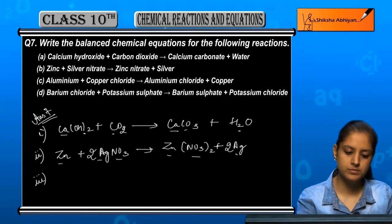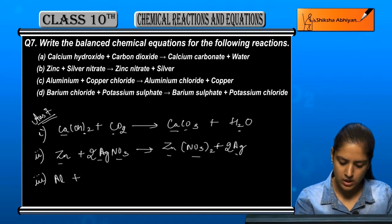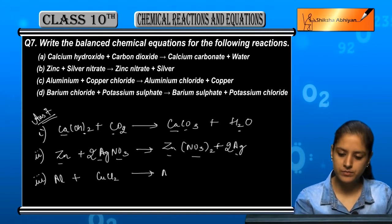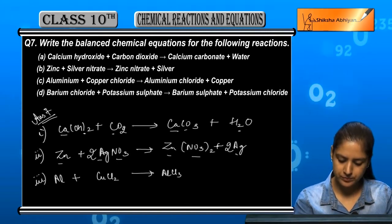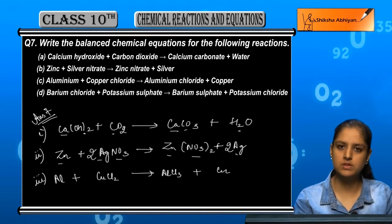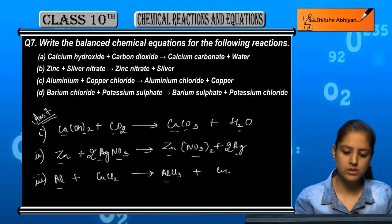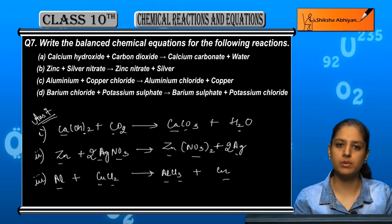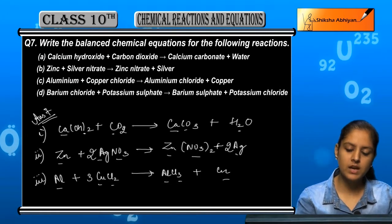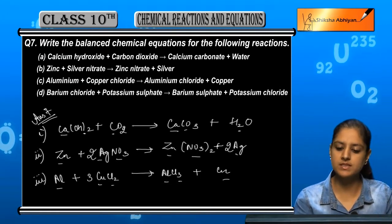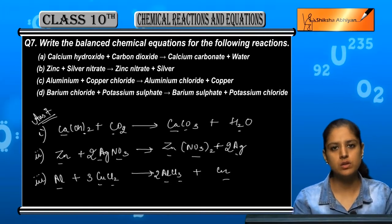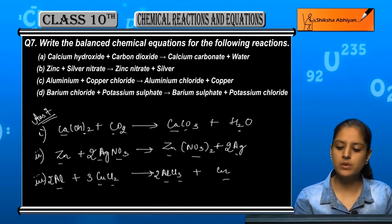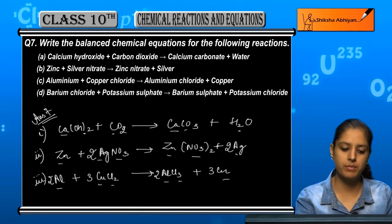Third reaction: Al plus copper chloride CuCl₂ gives AlCl₃ plus copper Cu. Al is 1, Cu is 1, but Cl is 2 on the left and 3 on the right. To balance Cl, multiply CuCl₂ by 3 to get 6, and AlCl₃ by 2 to get 6. Al becomes 2 on the left, so multiply Al by 2. The balanced form is: 2Al + 3CuCl₂ → 2AlCl₃ + 3Cu.